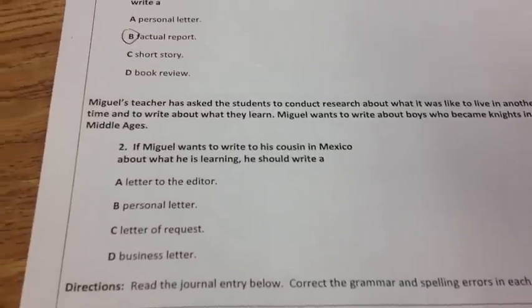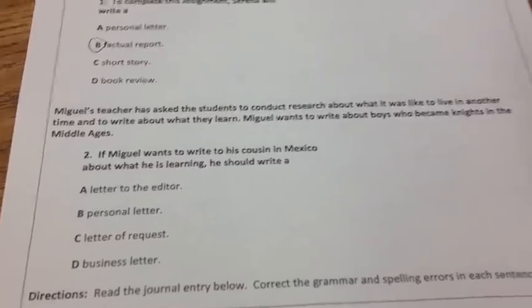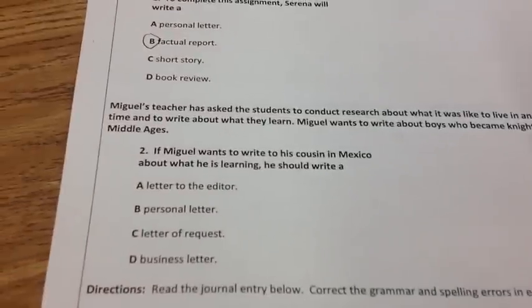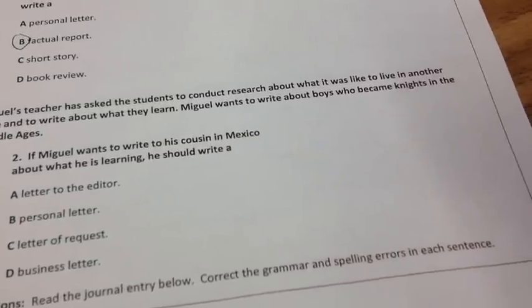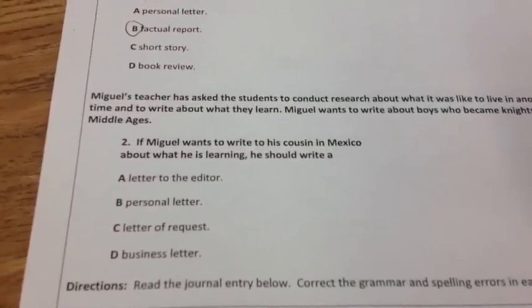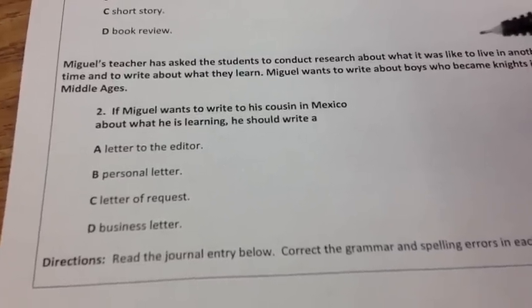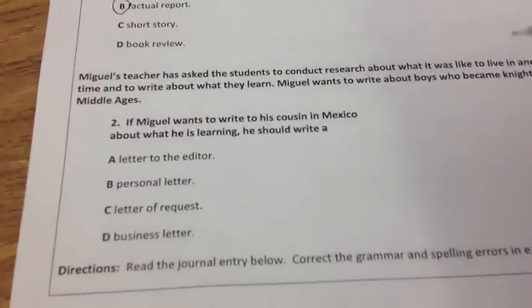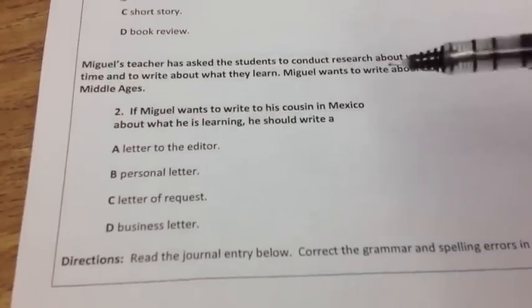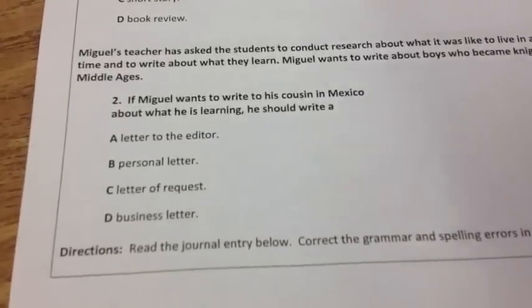Next passage: Miguel's teacher has asked the students to conduct research about what it was like to live in another time and to write about what they learned. Miguel wants to write about boys who became knights in the Middle Ages. Number two: if Miguel wants to write to his cousin in Mexico about what he is learning, he should write — A, letter to the editor; B, personal letter; C, letter of request; or D, business letter.